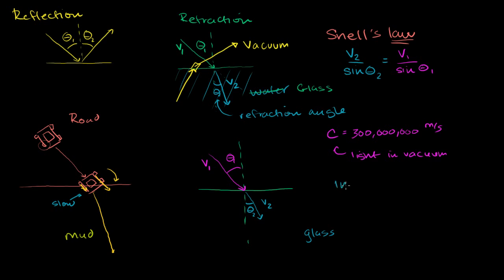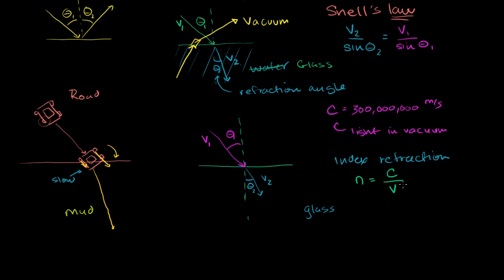The index of refraction is defined for any material — there's an index of refraction for a vacuum, for air, for water, for any material that people have measured it for — and it's usually specified as N. It is defined as the speed of light in a vacuum, C, divided by the velocity of light in that medium. So if N equals C divided by V, then V equals C divided by N.